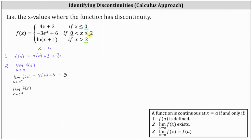For the limit from the right, as x approaches zero from values greater than zero, we're in the interval where x is greater than zero and less than or equal to two, so we use f(x) = -3e^x + 6. By direct substitution: -3e^0 + 6 = -3(1) + 6 = 3. Because the one-sided limits are equal, the limit of f(x) as x approaches zero is 3, so the second condition is met.